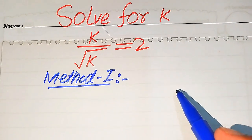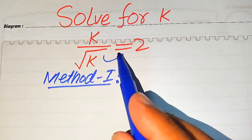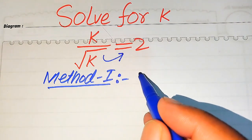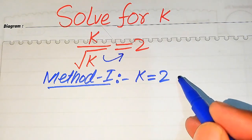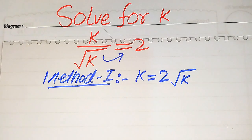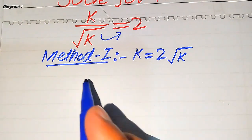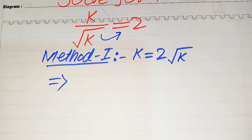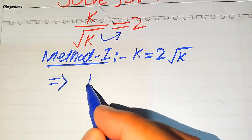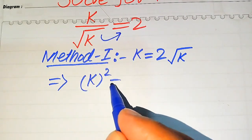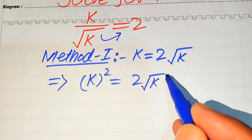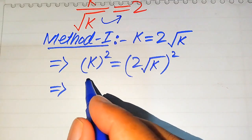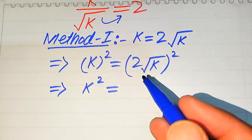In the first method, we move the square root of k to the right hand side. Since it is dividing on the left hand side, when we move it to the right hand side it is multiplied, and it becomes k equals 2 times square root of k. To find the values of k, we eliminate the square root sign from the right hand side by squaring both sides, giving us k squared equals the quantity 2 times square root of k, whole squared.